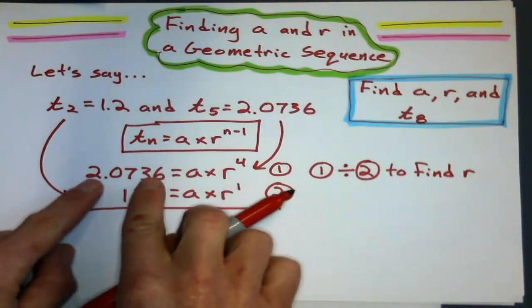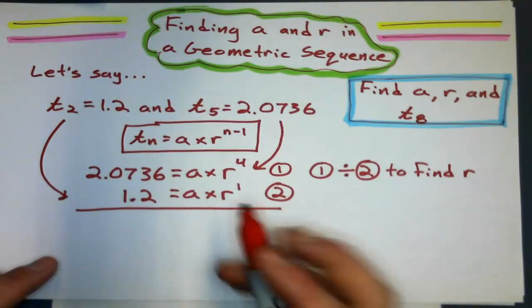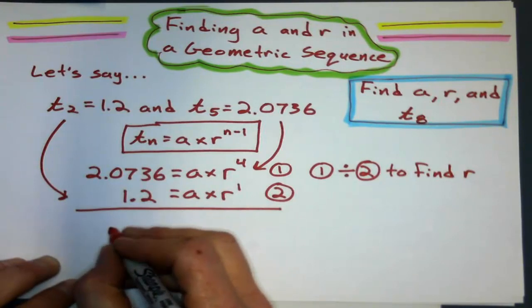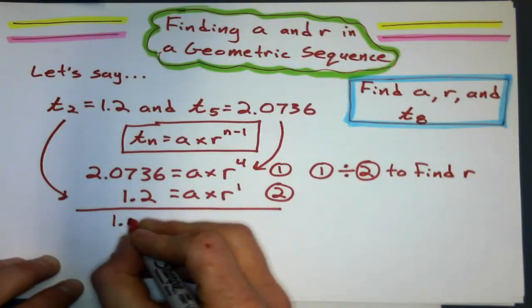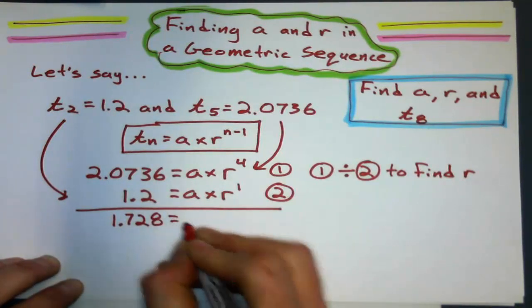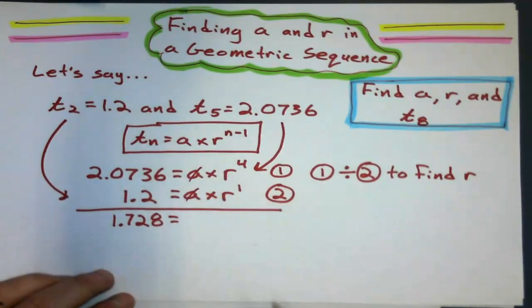So I go, okay, 2.0736 divided by 1.2. What does that give me? I try that on the calculator. Divide this by 1.2, and I should get, I think it's 1.728. Now, a divided by a, well that cancels out. That's great, because that gives me 1.